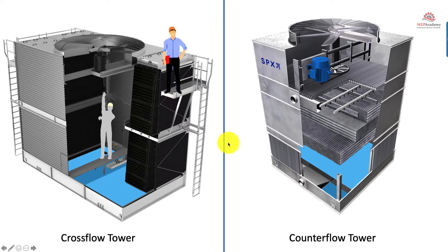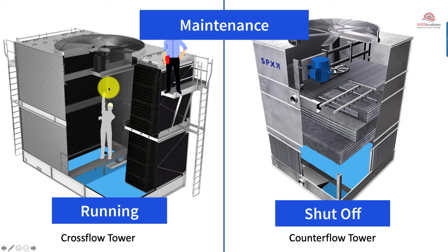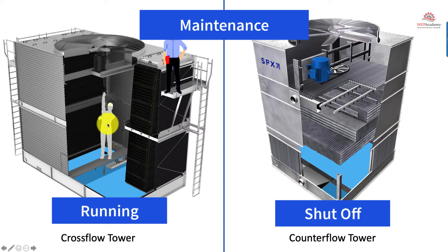Looking at maintenance differences: on the cross flow, you can maintain the system while it's running. The water trickles down to the side, so a maintenance person can come through an access door and use a walking platform above the cold water basin without getting wet. On the counter flow, you can't get inside while it's running because water trickles down over basically the whole footprint. Access to the motor must be from the outside or through an access door, as opposed to the cross flow where it's accessible from inside.